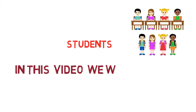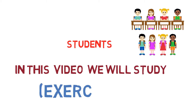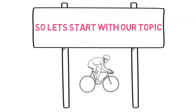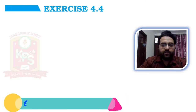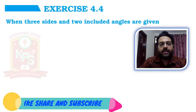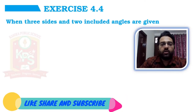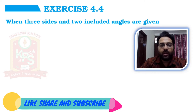Students, in this video we will study Exercise 4.4. So let's start with our topic. Exercise 4.4: When 3 sides and 2 included angles are given. Here we will have 3 sides given and 2 included angles, and in this condition, we will construct a quadrilateral.